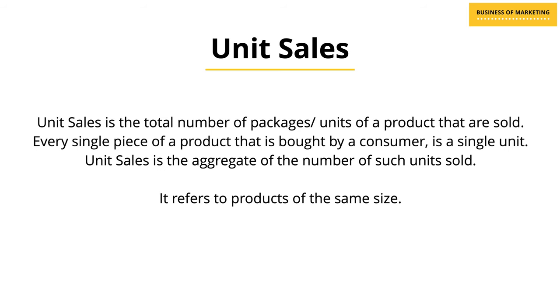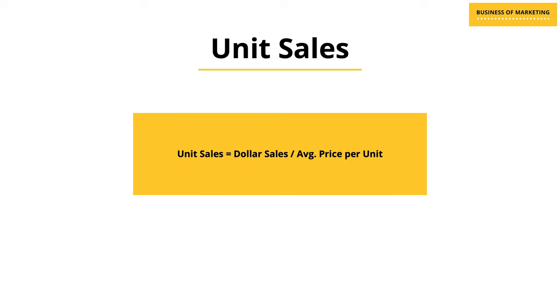The second term is unit sales. Unit sales is the total number of packages or units of a product that have sold. Every single piece of product bought by the consumer is a single unit, and unit sales is the aggregate of the number of such units. It refers to products of the same size. To calculate unit sales, you divide dollar sales or value sales by average price per unit.